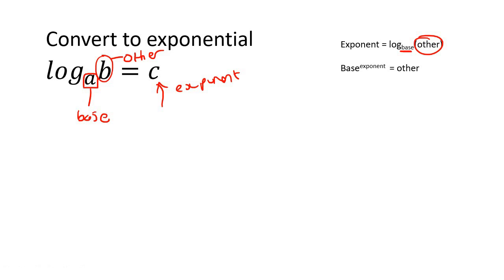So now to be able to rewrite that as an exponential equation just do it like this. It says that we start with the base, so the base was a, then we take the exponent which is c, and the other was b. Done. That is how you do it. You have now converted from a log to an exponential.